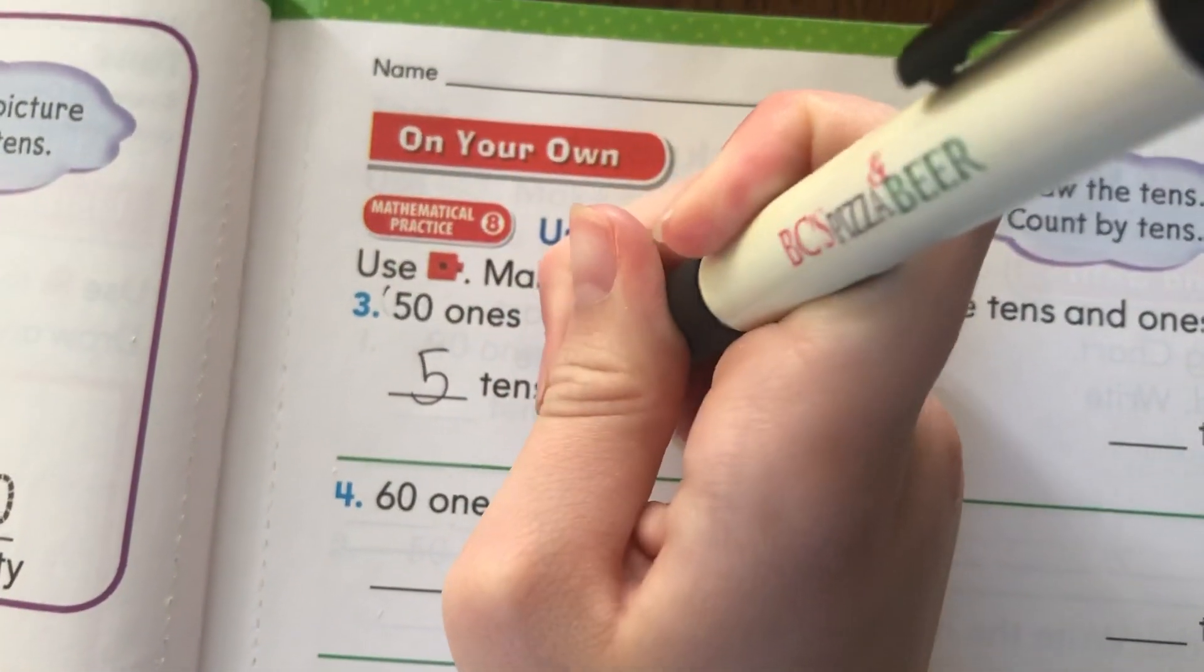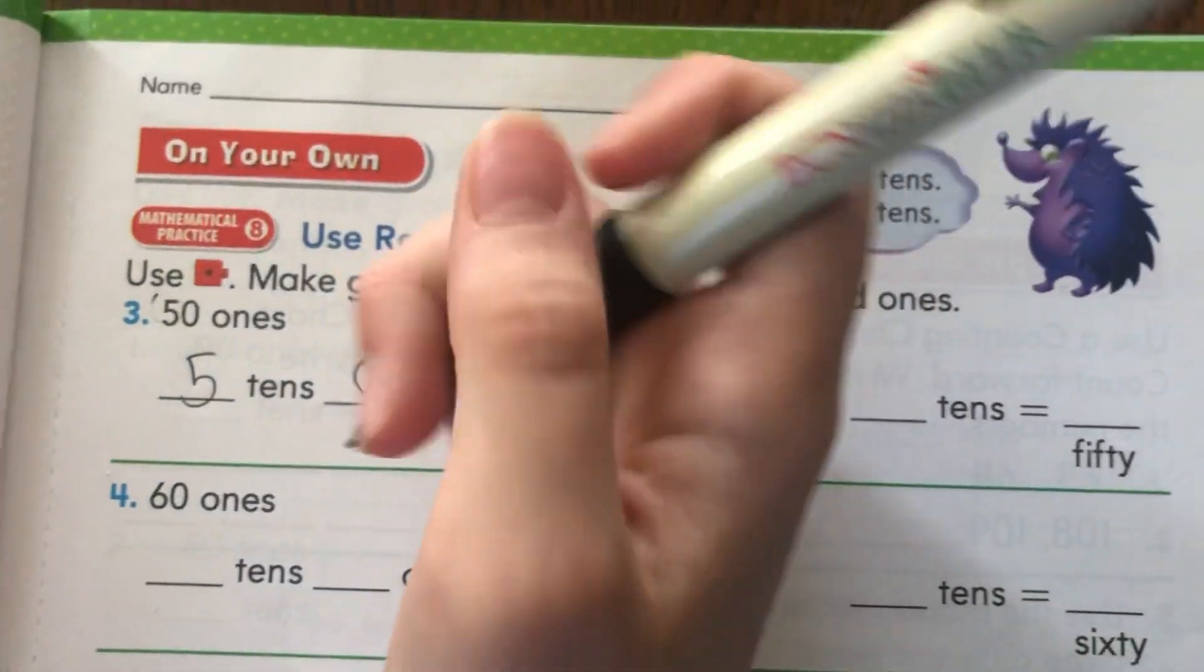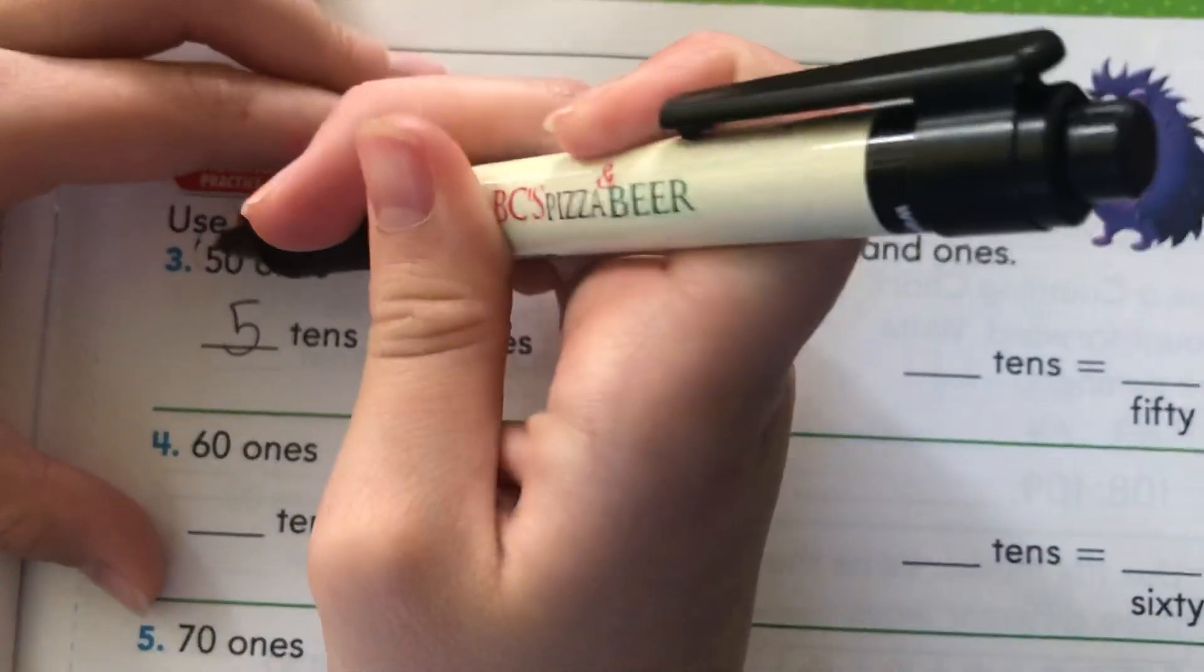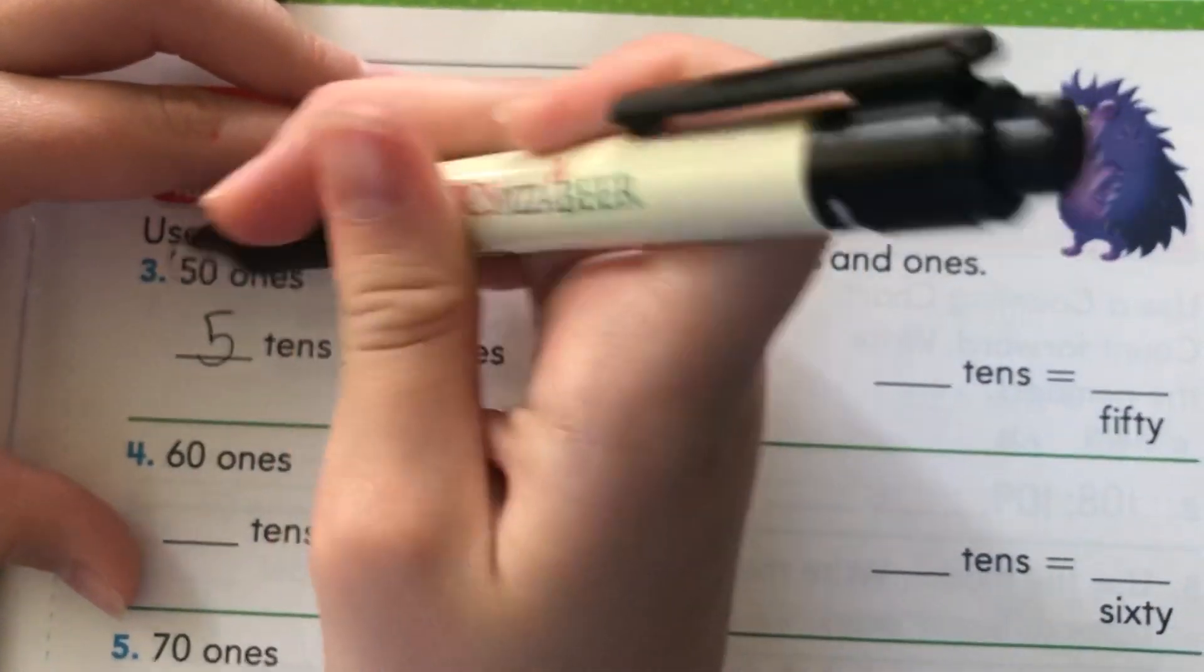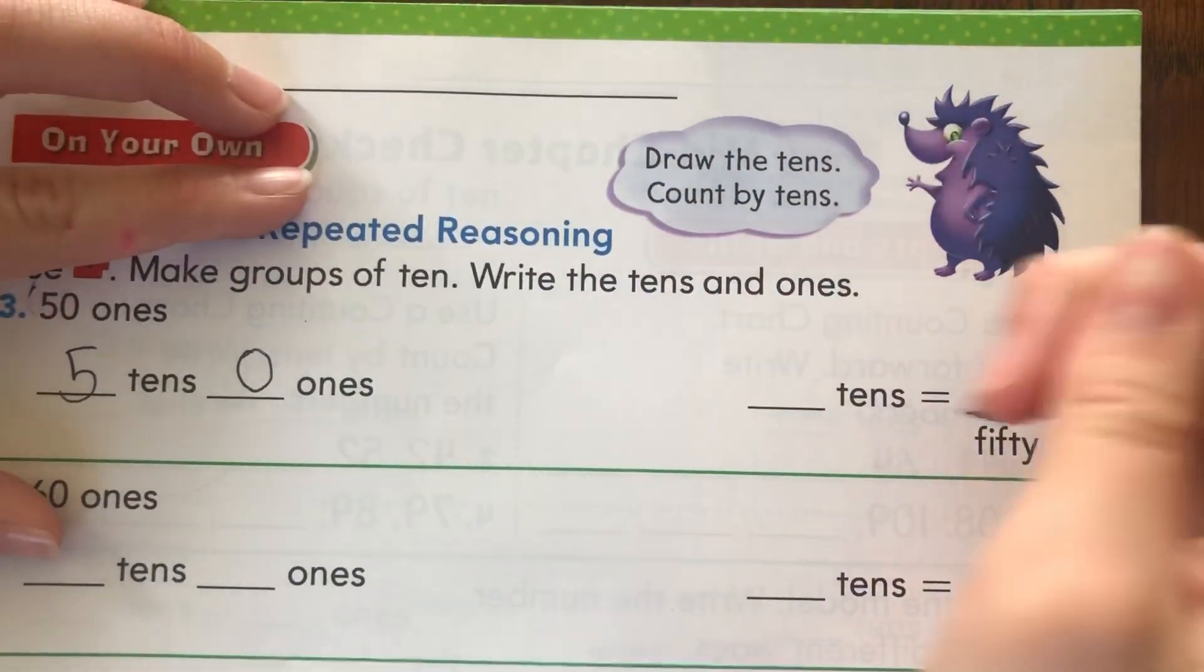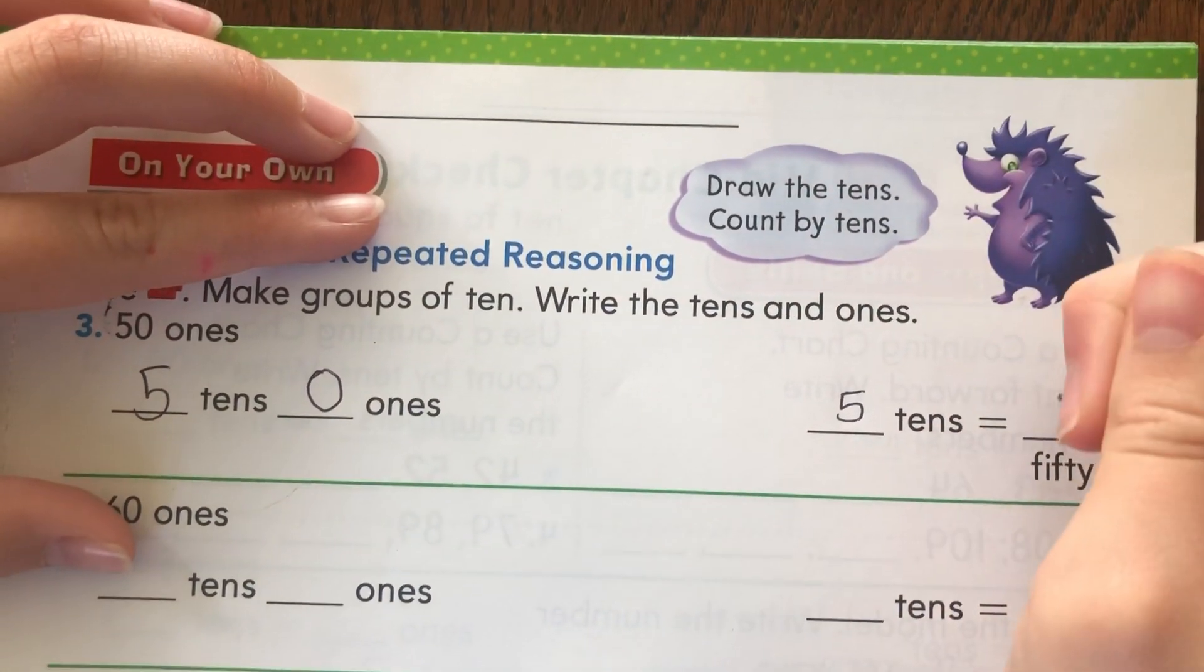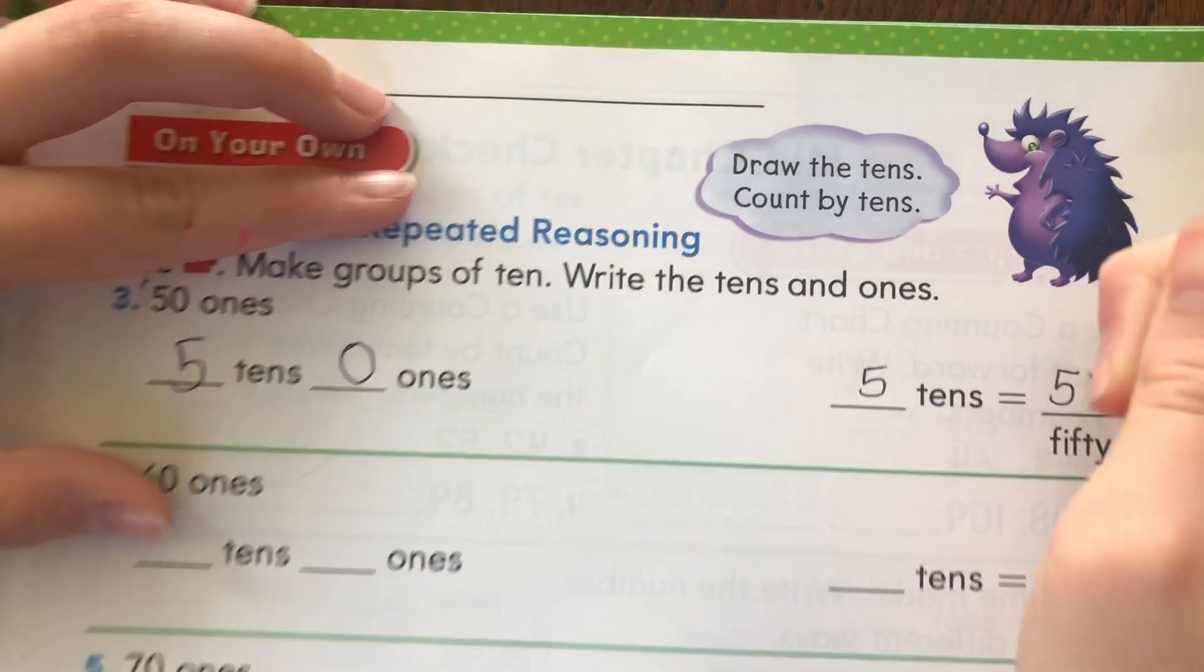And what number's in the ones column? Zero. And if you notice that once you write down your tens and ones, it actually makes your numbers. See, like fifty and fifty. Okay, so over here it says five tens equals fifty. Oh, I see how we would do this, Paige.